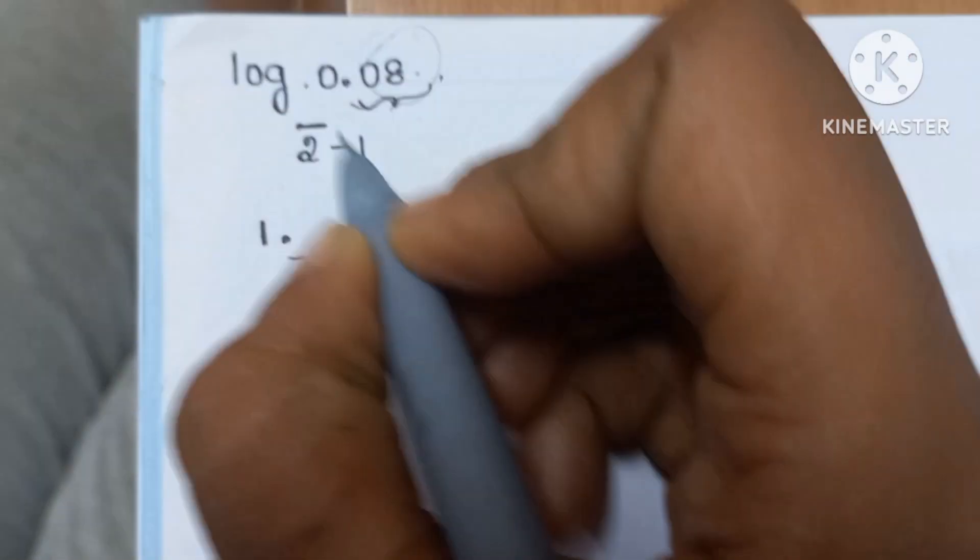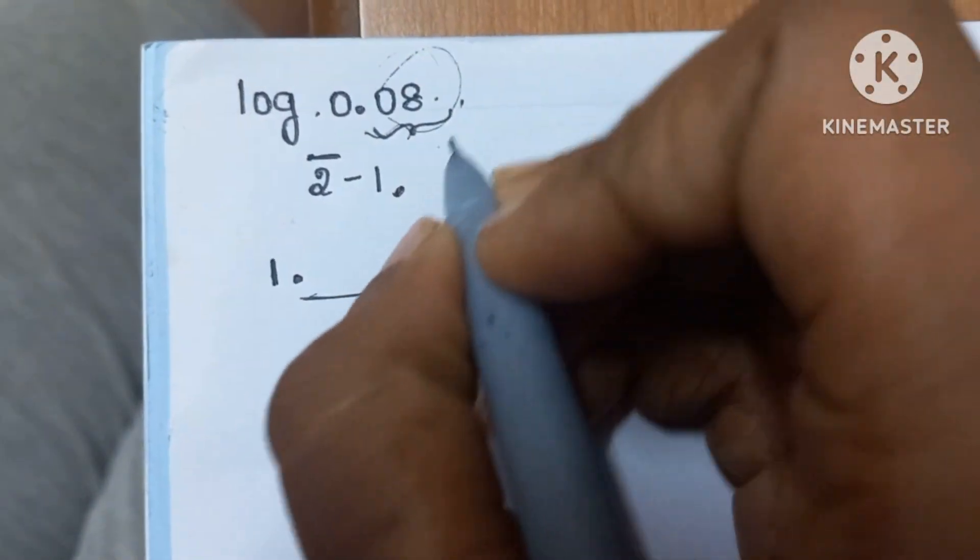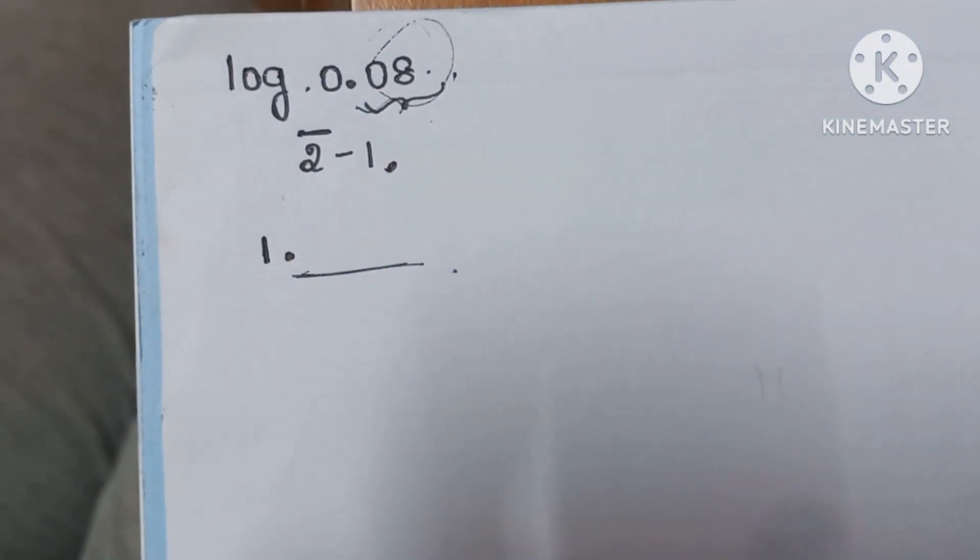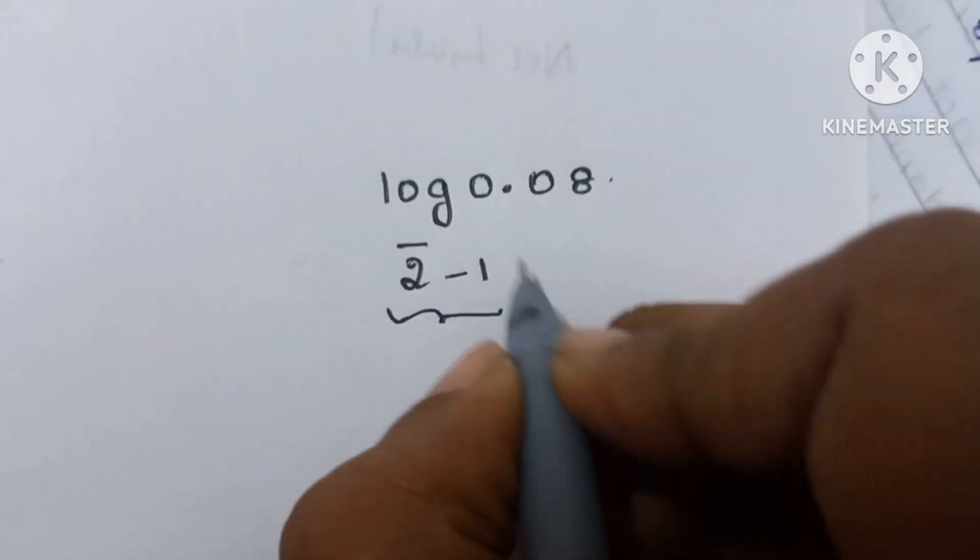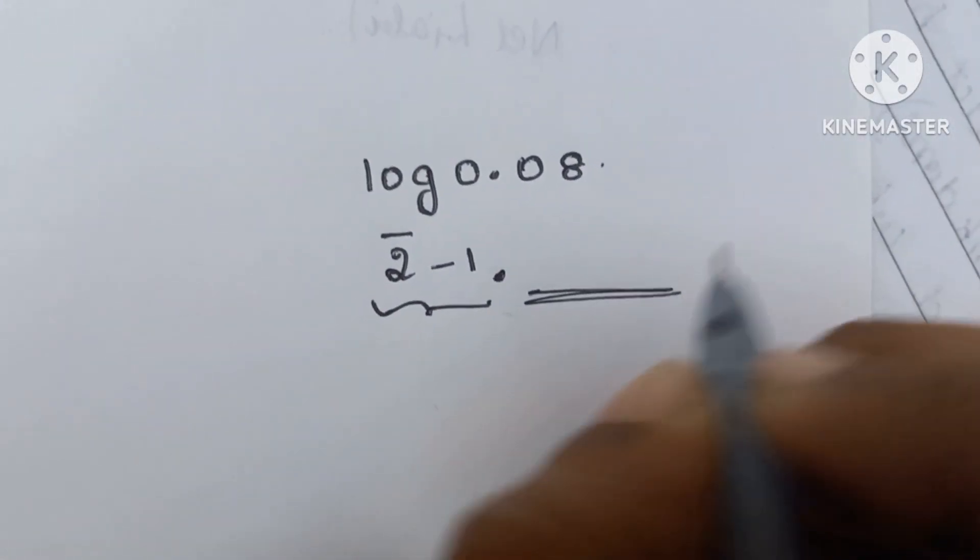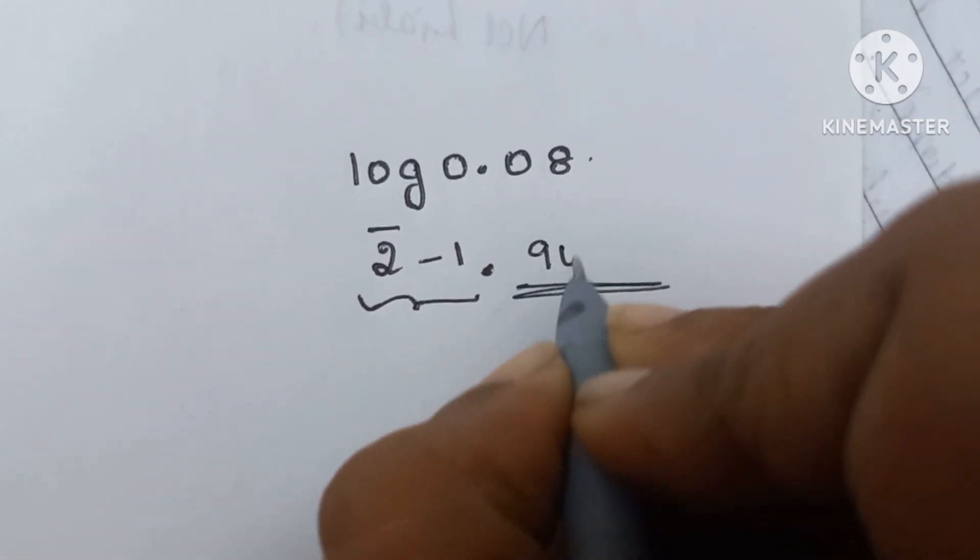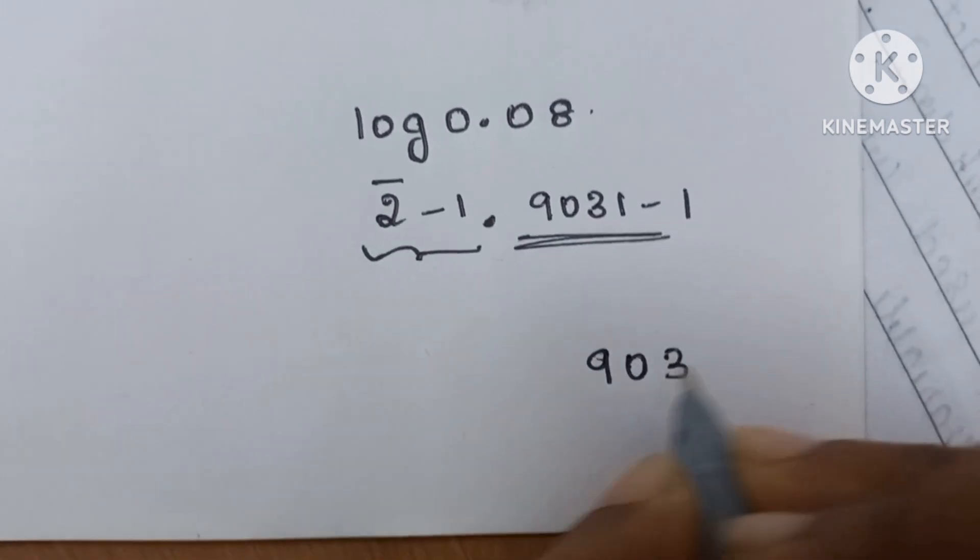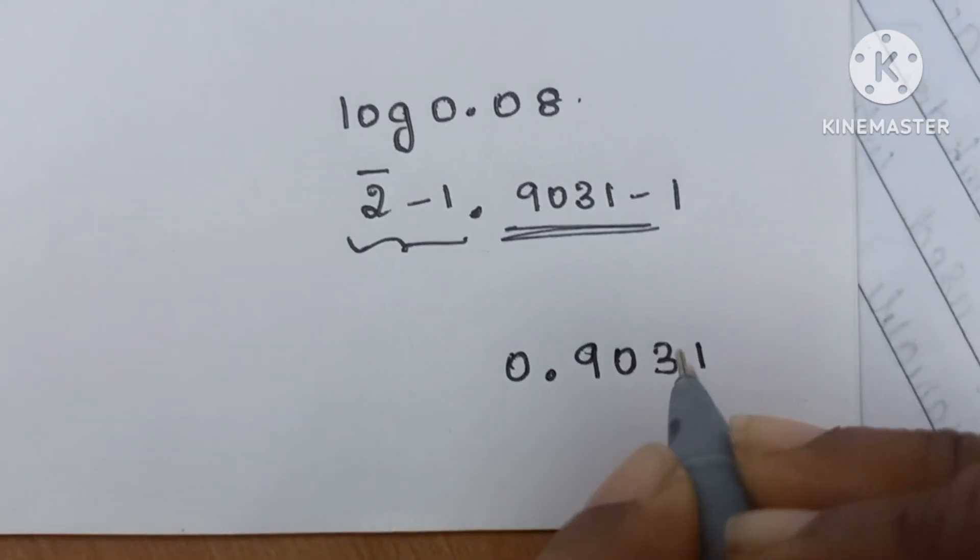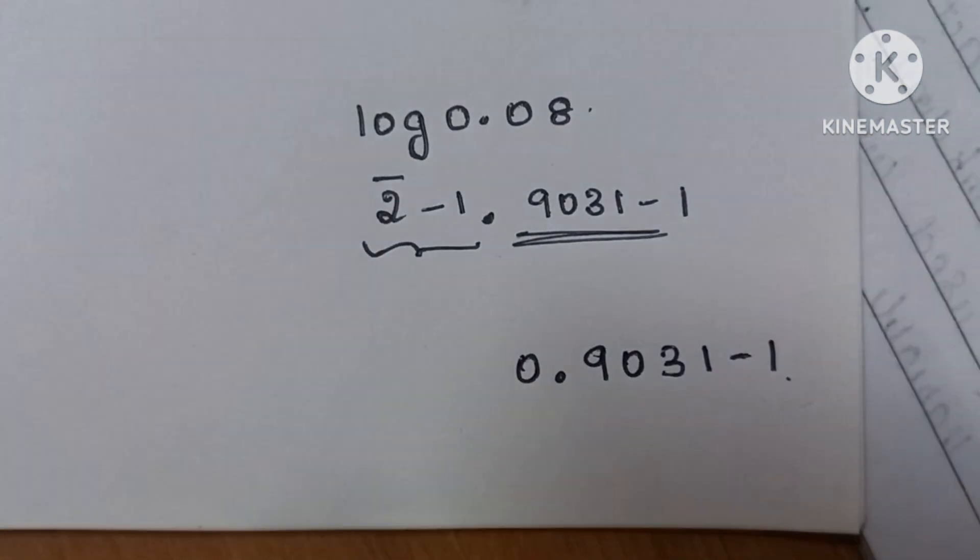We will continue from this part. So we did the left hand side. Now we will put a point and continue this side. We subtracted this side by 1. Therefore we will also subtract this side by 1. What we got is 9031. We will subtract this by 1 also. So it is 0.9031 minus 1.